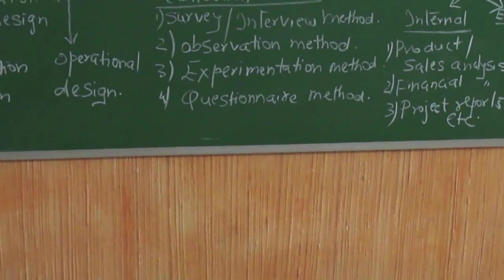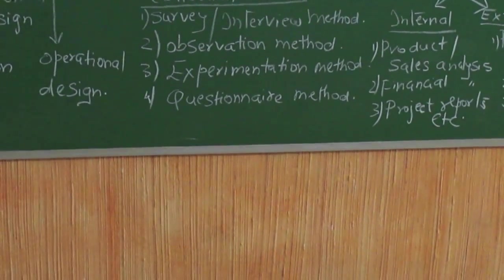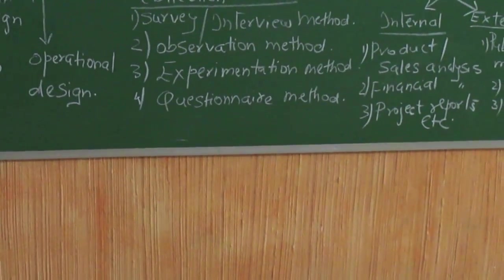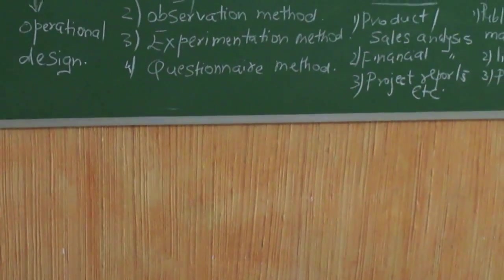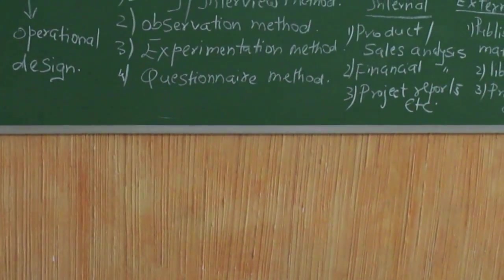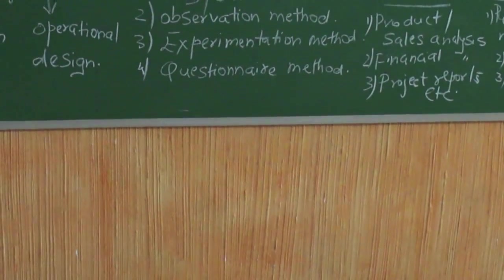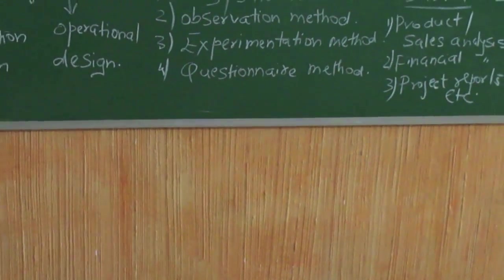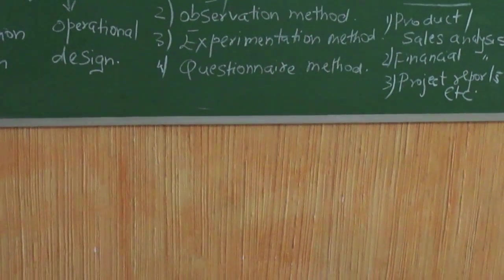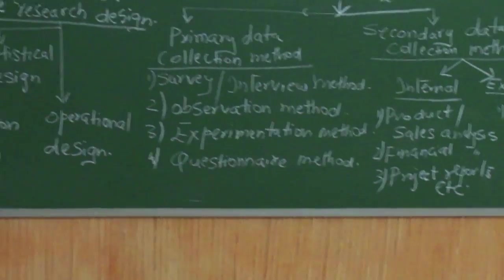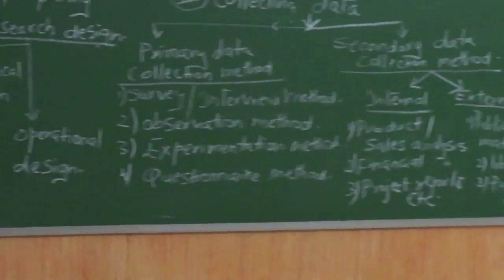Experimentation method of course is an experiment conducted where there is a controlled group and an experimental group, and then you come to a conclusion. Then there is questionnaire method where you give a questionnaire which can be open ended, closed ended, pictorial type, and they have to either tick it or write yes or no. So all this comes under the structured form and that is primary data collection method.